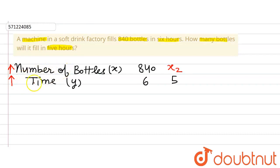So larger the number of bottles, larger will be the time taken by the machine to fill them. So that means this is a case of direct variation.